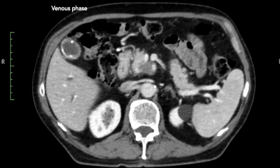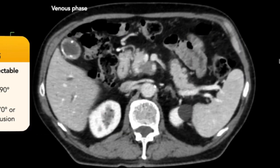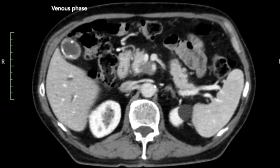Looking at the resectability criteria: based on the Dutch Pancreatic Cancer Group criteria, this tumor is irresectable since there is more than 90 degrees contact with the SMA. Looking at the NCCN criteria, this tumor is also irresectable based on arterial involvement — not solely on the amount of SMA involvement, since that is less than 180 degrees, but given the fact that there is involvement of both the hepatic artery and the SMA, which makes resection of the hepatic artery impossible. And even if the arterial involvement were less, the amount of venous involvement would need to be discussed with the surgeon as to whether it would be reconstructable, because otherwise this would also be an irresectable tumor based on venous involvement.